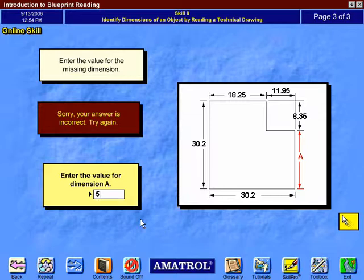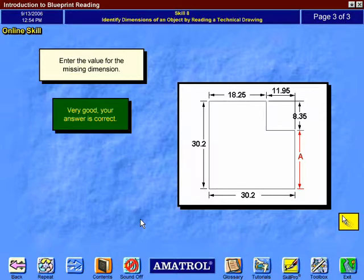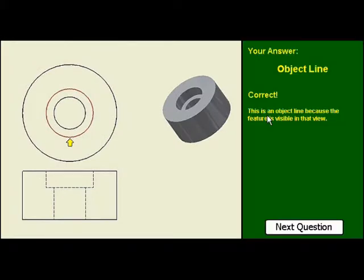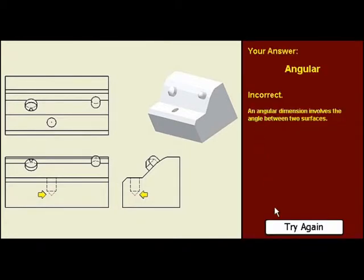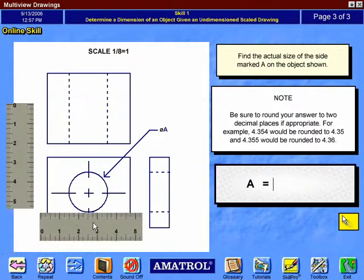For example, students practice blueprint reading by evaluating various part drawings, including determining the proper line types to use, reading different types of features, and determining the actual dimension of a part from a scaled part drawing.